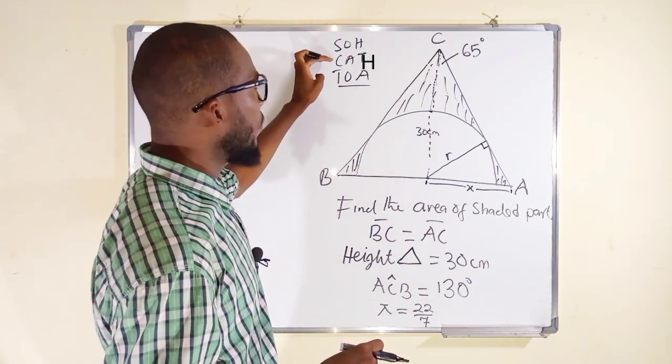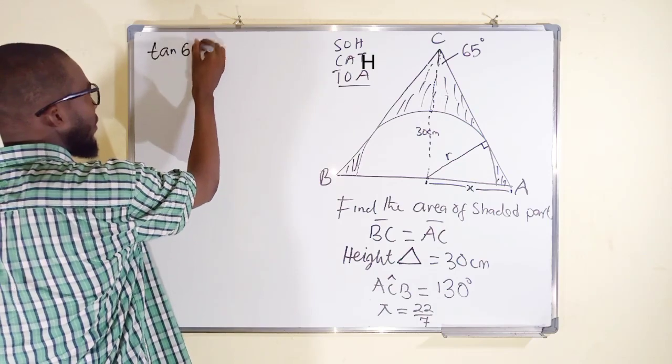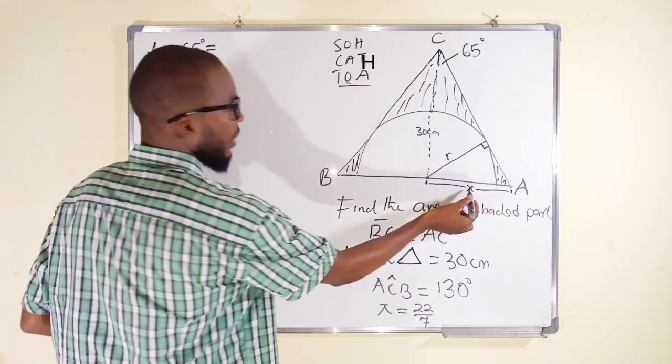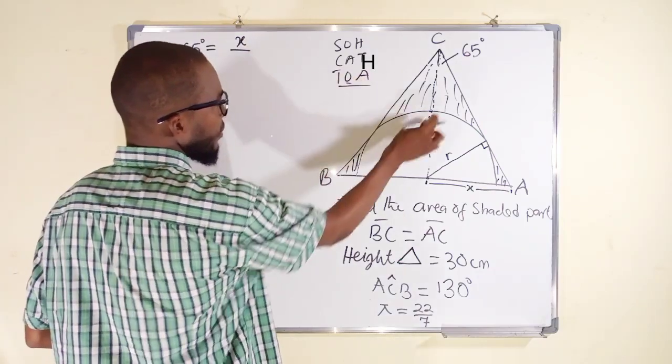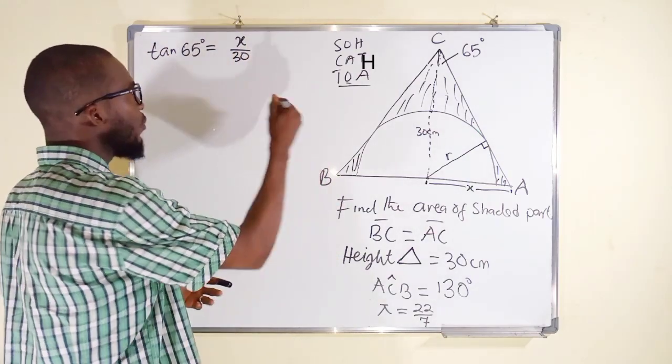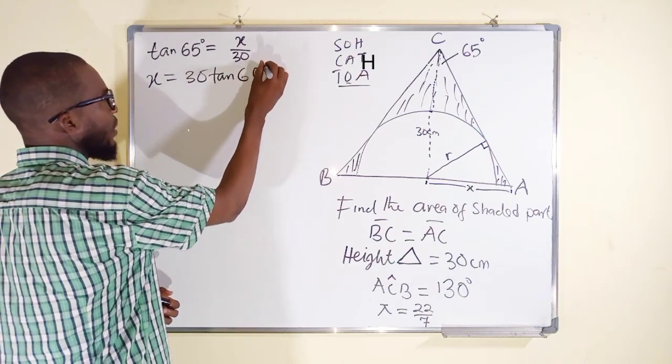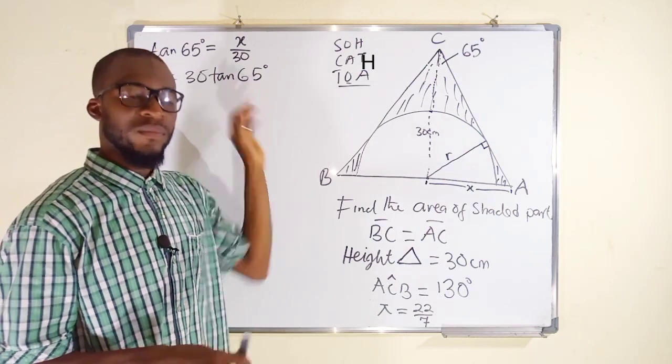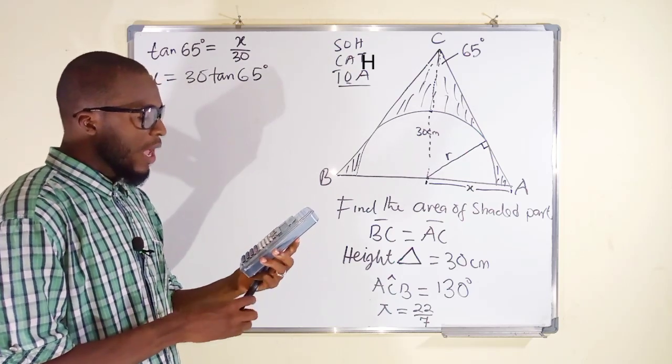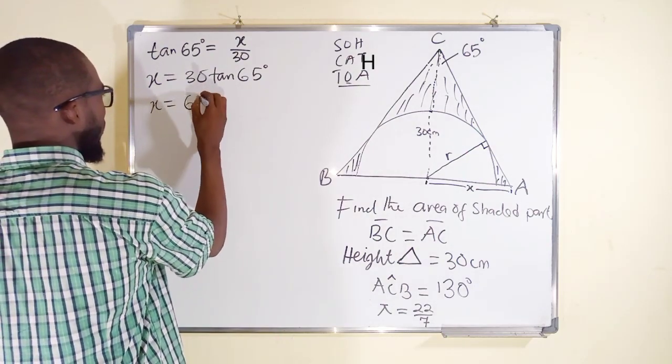We are going to apply tan ratio. So tan 65 degrees is equal to opposite divided by adjacent. And the opposite is x divided by the adjacent, which is the height of this triangle, 30. So to find x, which is opposite to that angle, we can now multiply both sides by 30, and x will be equal to 30 tan 65. Let me use my calculator to press this directly. So we have 30 tan 65, which is approximately equal to 64. So x is equal to 64 cm.